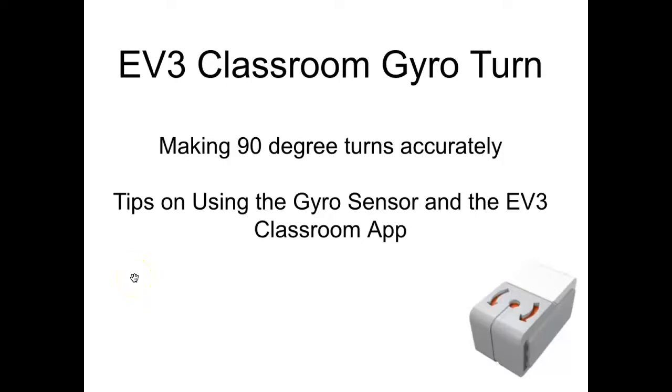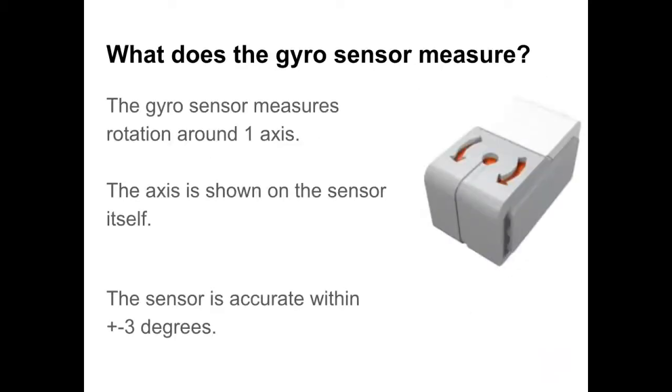Talking about the gyro sensor specifically, we're going to be making 90-degree turns accurately. I've got some tips on using the gyro sensor and some troubleshooting. If it's not working properly, feel free to skip to the end where I've got suggestions on what to do if it's not turning properly.